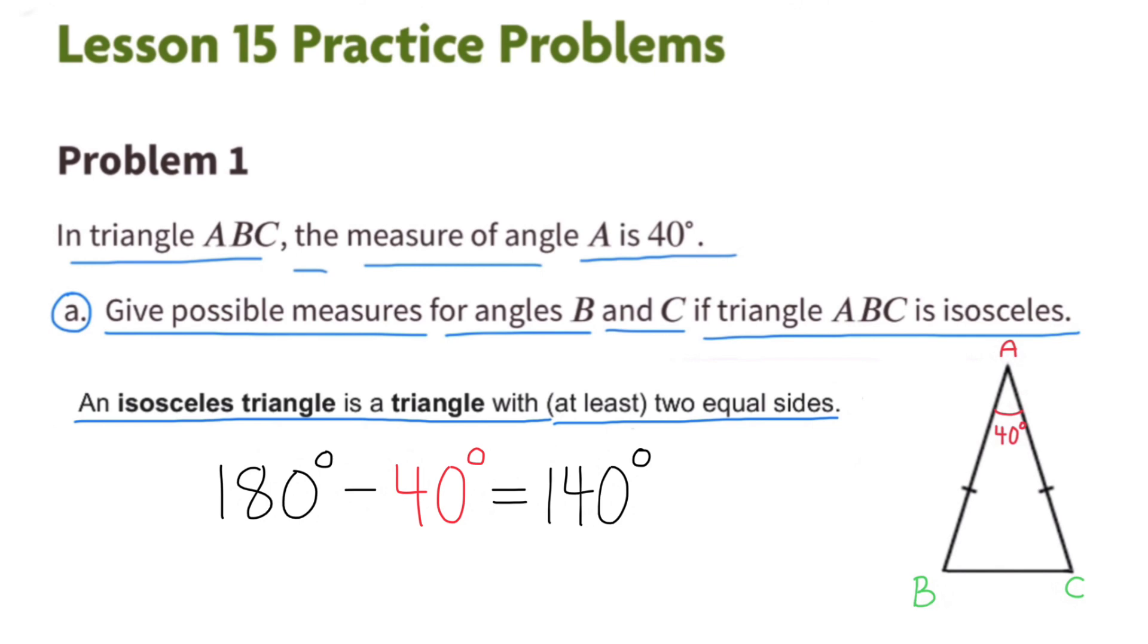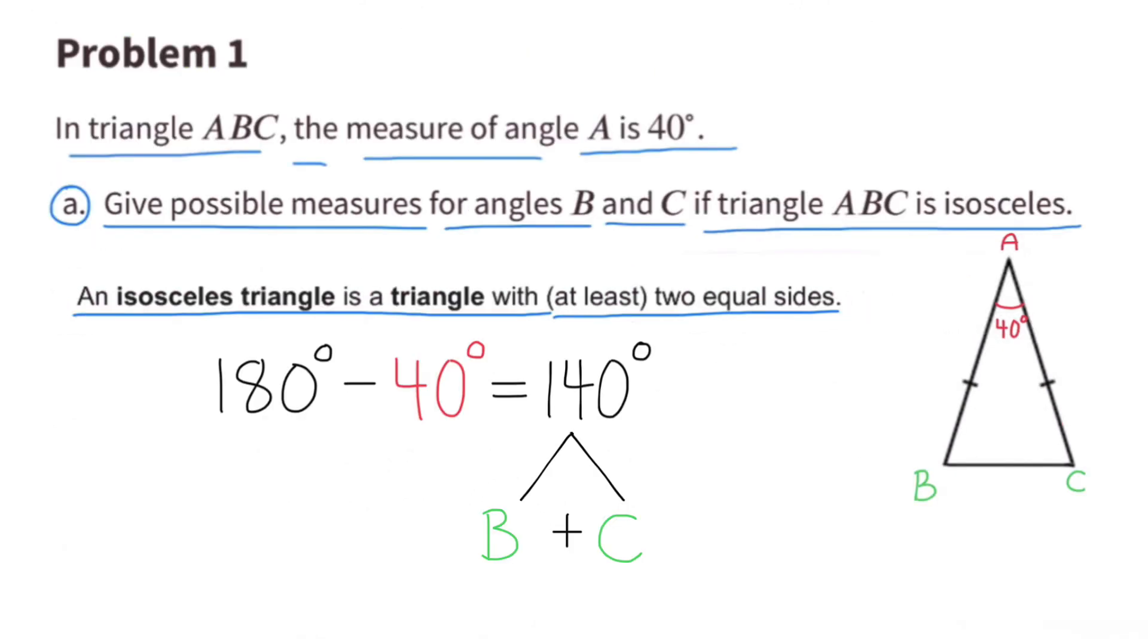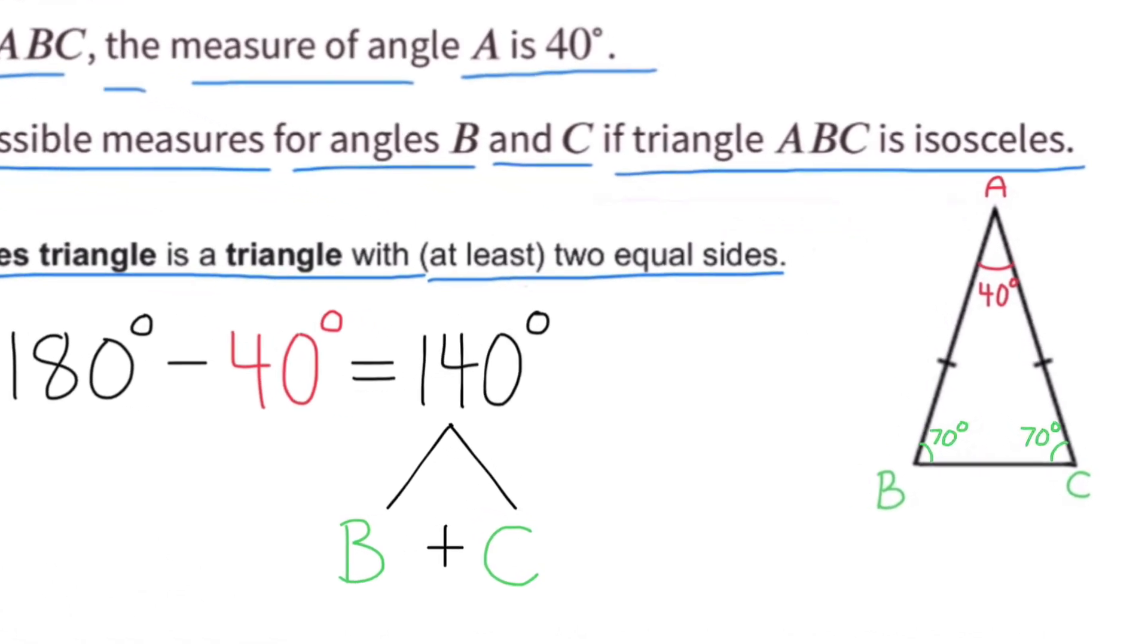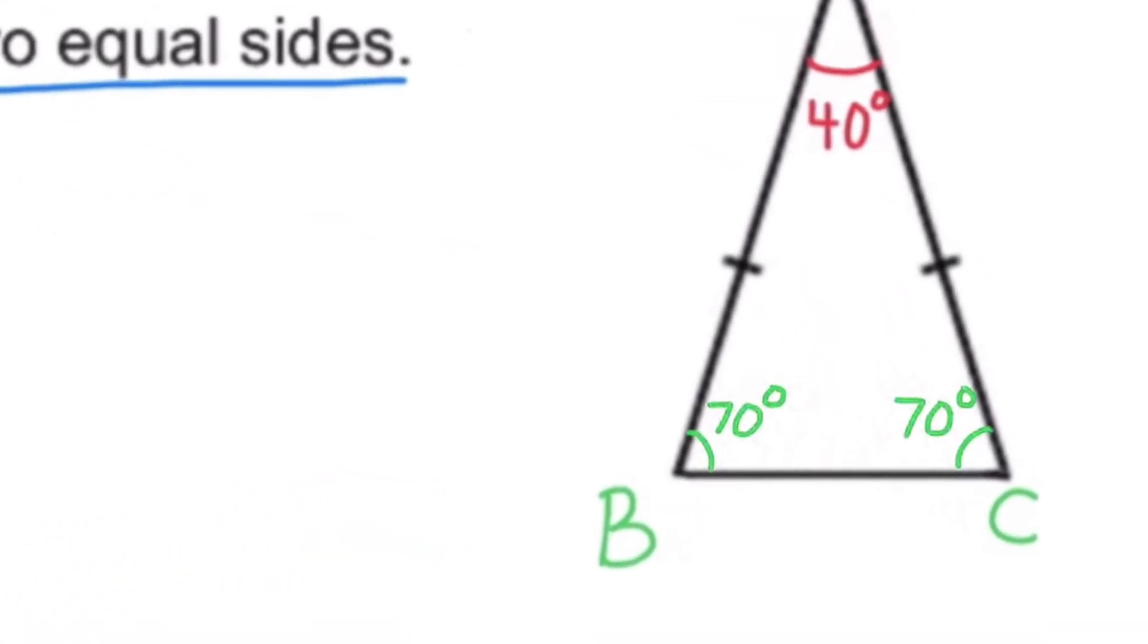I can subtract 40 degrees from 180 degrees and I get 140 degrees, which would be the combined total of angles B and C. 140 degrees divided by 2 is 70, so angles B and C have a measure of 70 degrees.